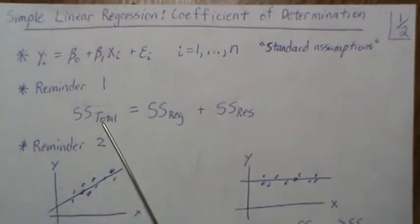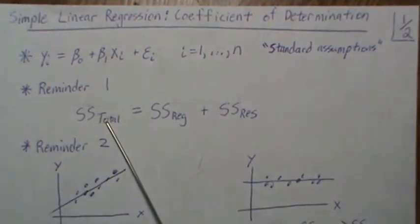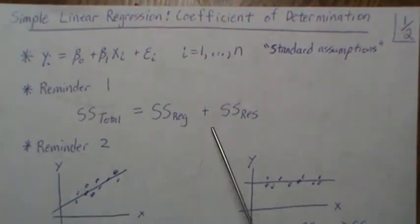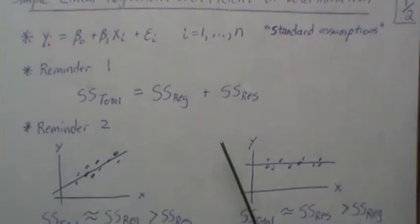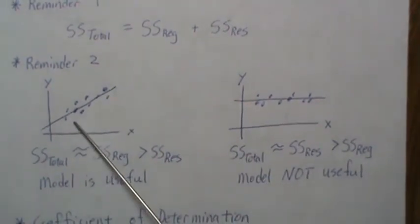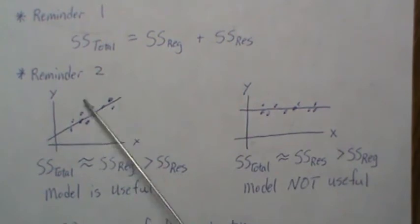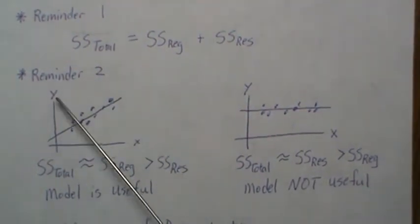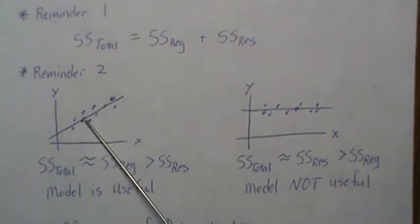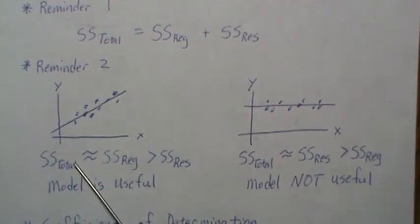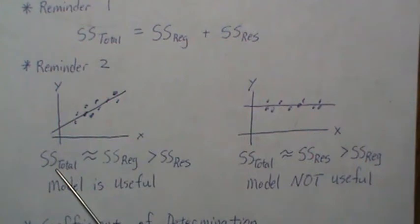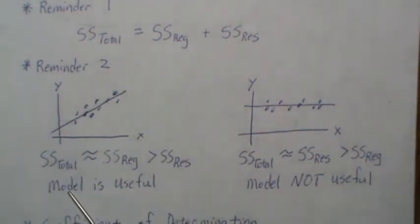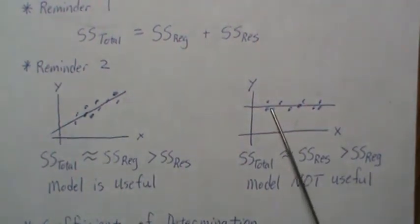As a reminder from a previous video, we partitioned the total sum of squares into the regression sum of squares and the residual sum of squares. We also examined that if we plot our data and fit a line with a non-zero slope — positive or negative — the regression sum of squares is close to the total sum of squares, and the residual sum of squares is significantly smaller. The model is useful in this case.